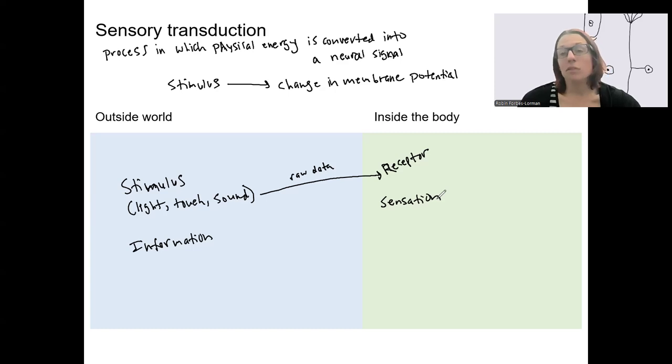Sensation is the effect of sensory transduction. So we're converting the raw data to a neural signal. Our receptor is doing that and that allows for sensation.